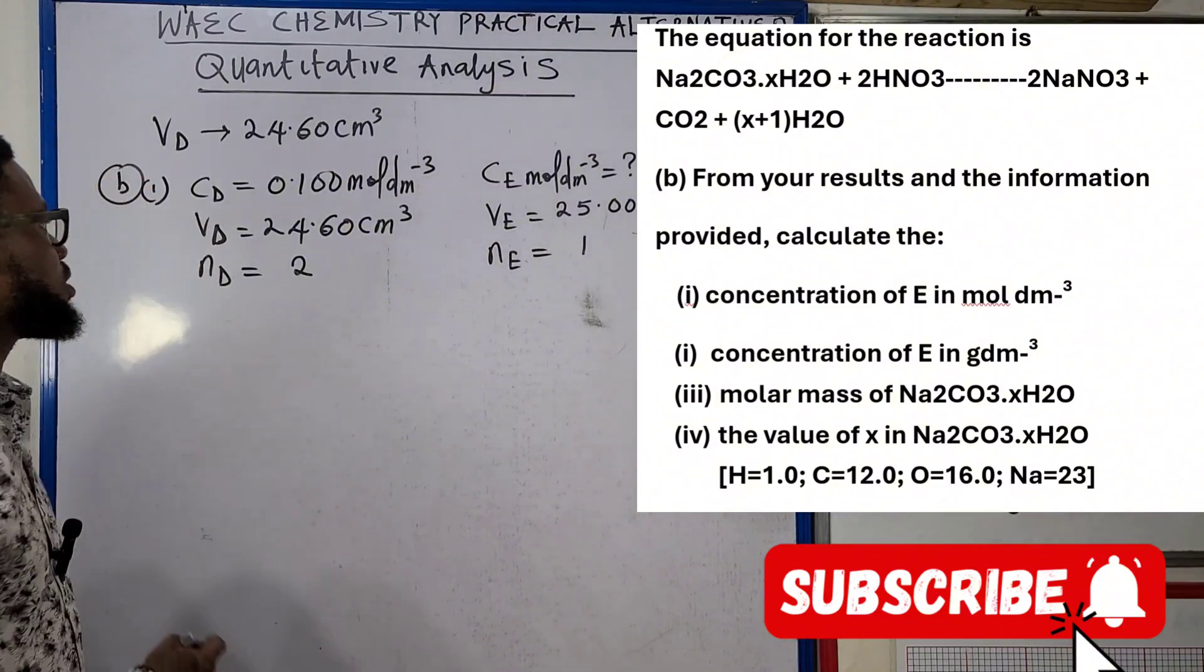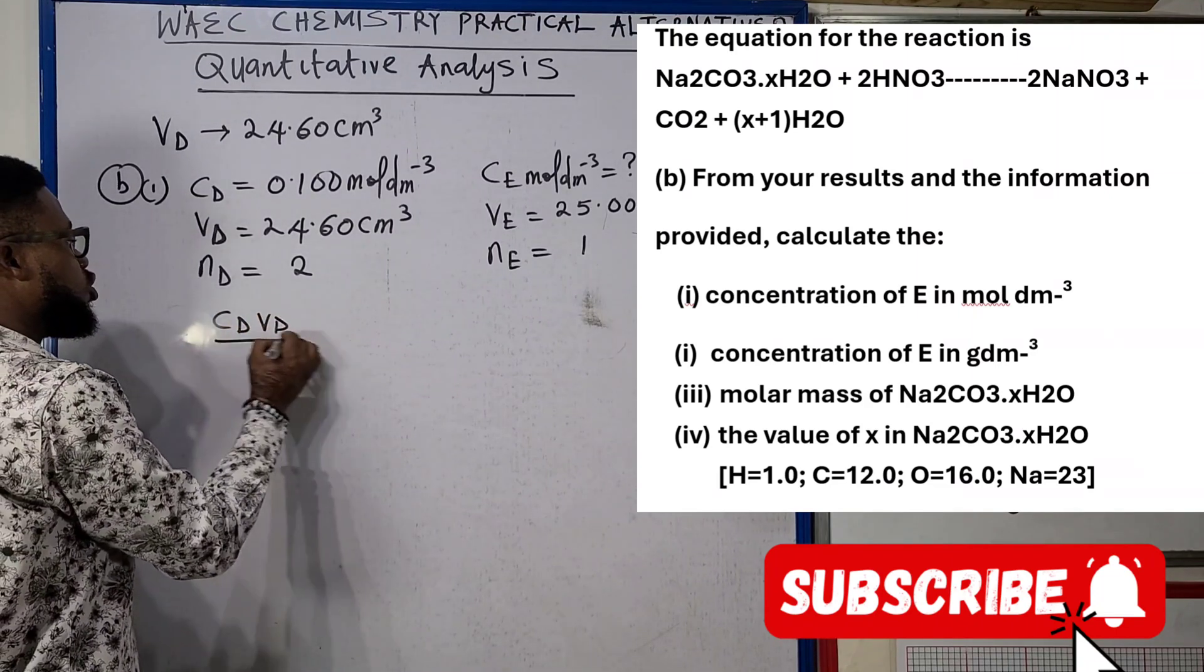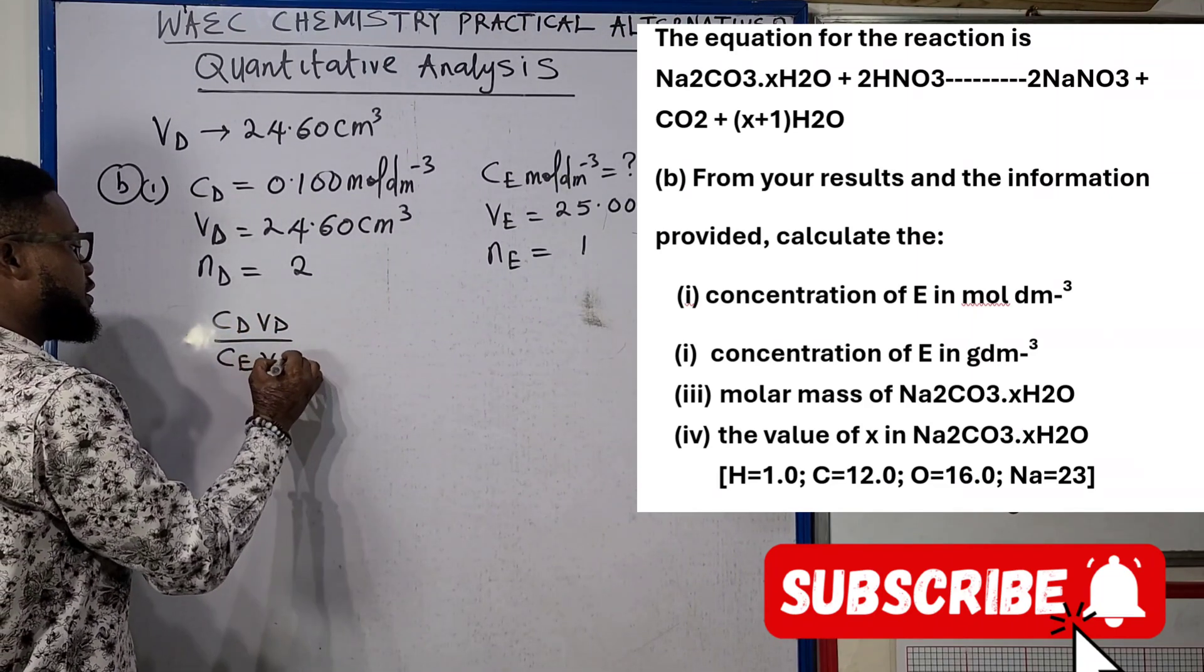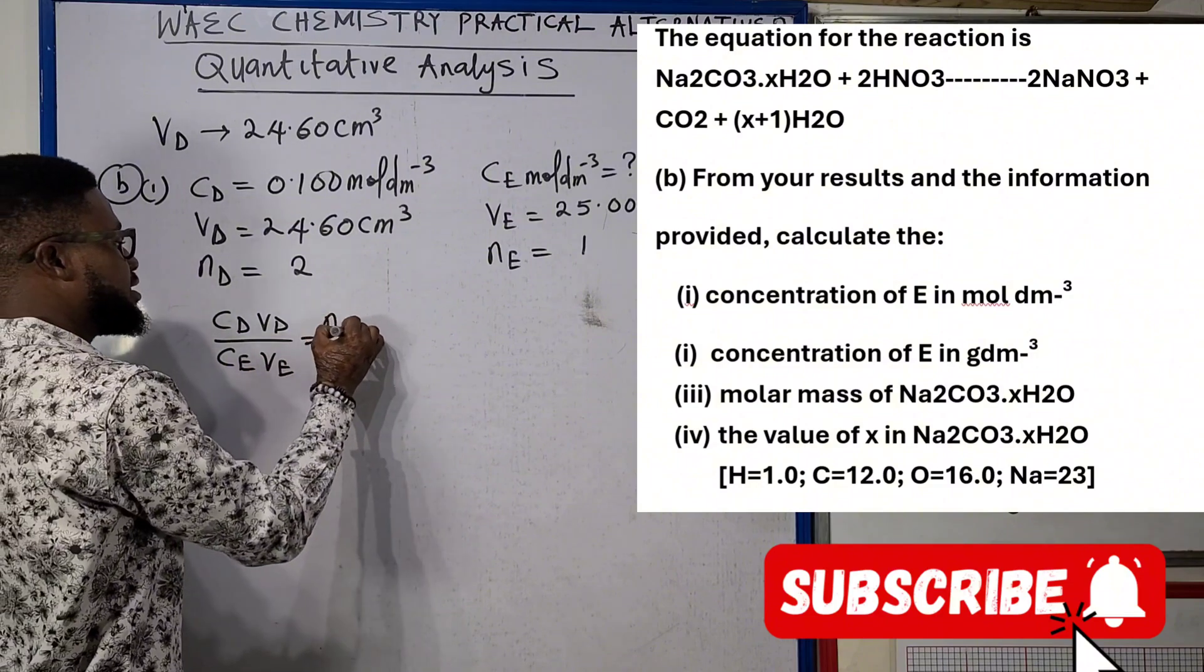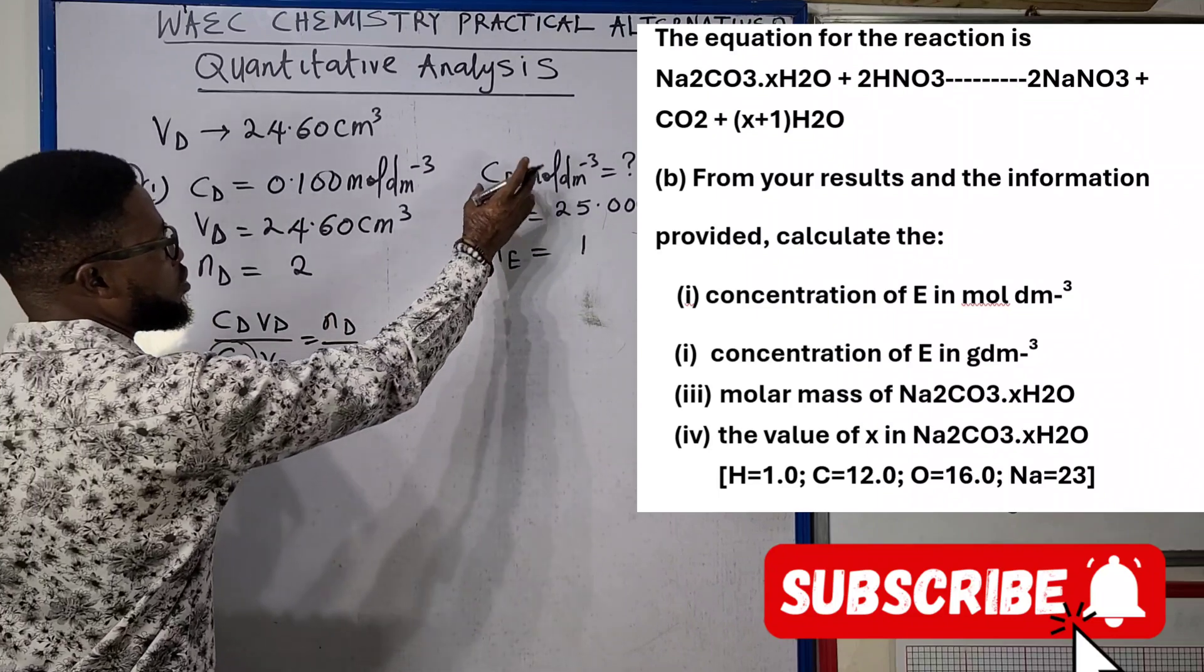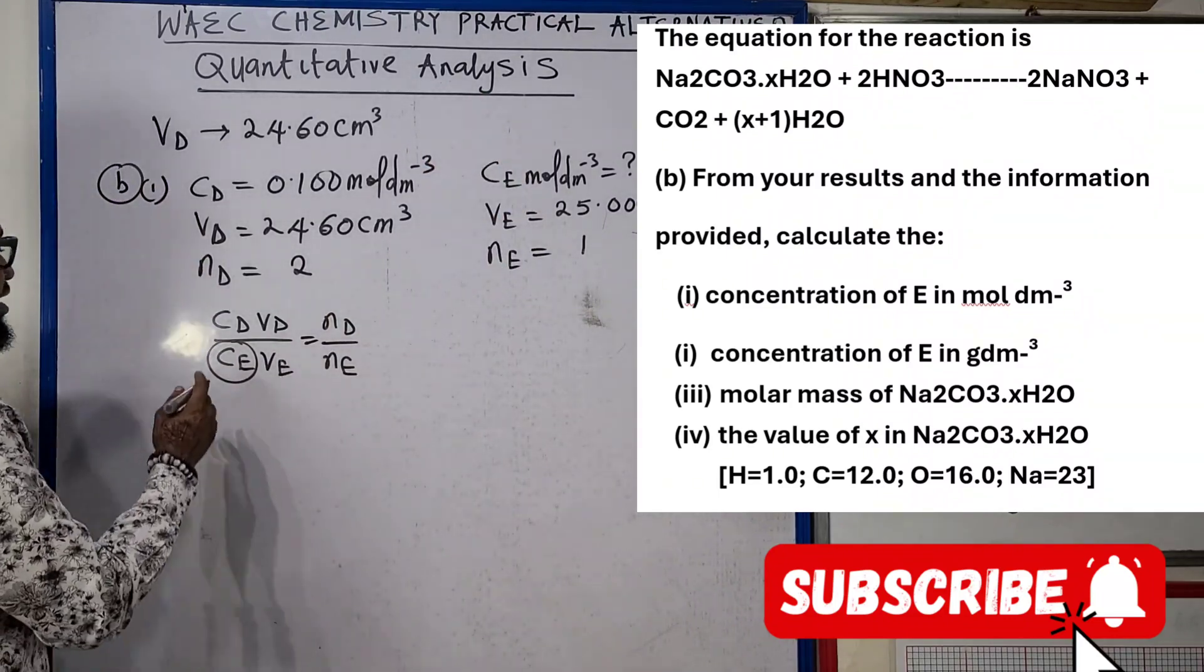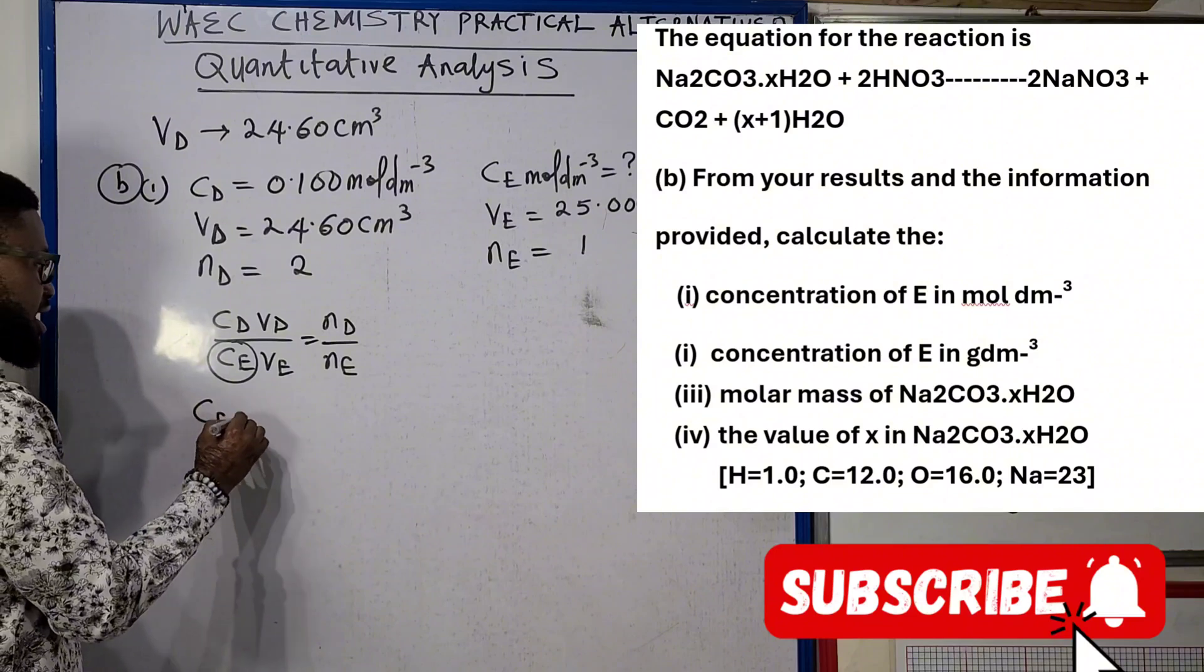It says calculate the concentration of E in mole per dm³. If we say CD·VD over CE·VE equals to ND over NE, and we make CE the subject, being that we are looking for concentration of sodium carbonate, CE is going to be CD·VD·NE divided by VE·ND.